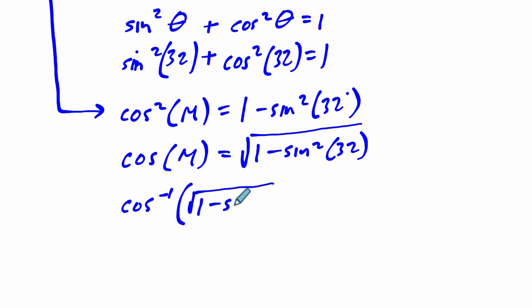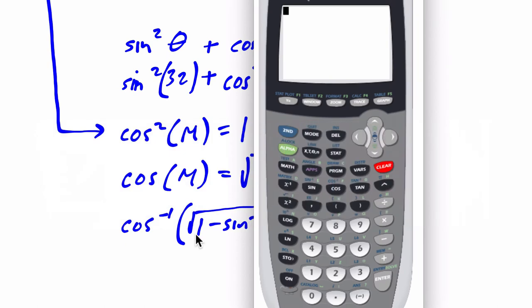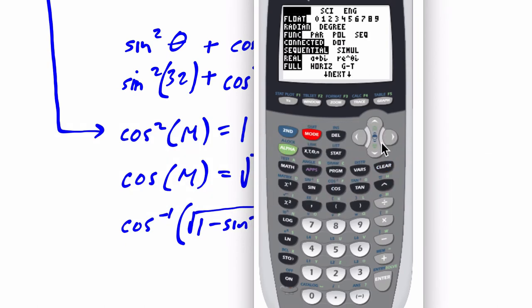So the inverse cosine of this thing right here, 1 minus the sine square root of 32. Okay. That should equal M. I'm just reversing the process. I don't know what angle gives us that cosine. So I take out my graphing calculator. And I'm going to make sure I'm in degree mode here. I'm in radian mode, so I'm going to fix that. So I press the mode button here. I go over to degree and hit enter, quit out, second mode.